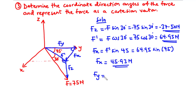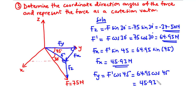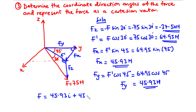Now let's find Fy. Fy = F′·cos45 = 64.95·cos45 = 45.93 newtons. Fy is directed along the positive y-axis. Therefore, the force F as a Cartesian vector is: F = 45.93i + 45.93j − 37.50k newtons.